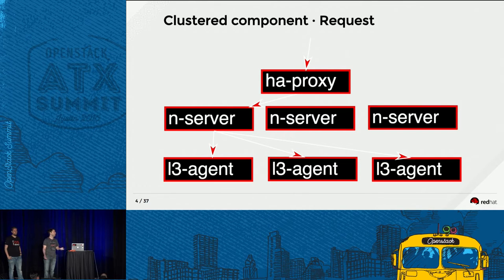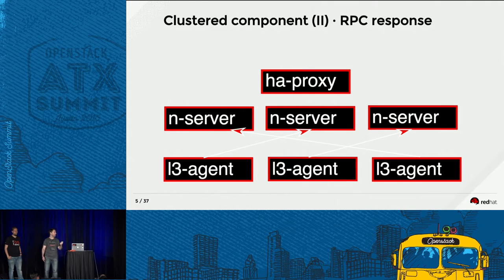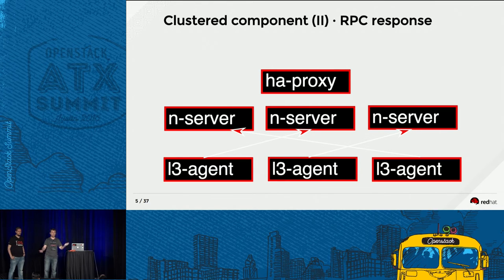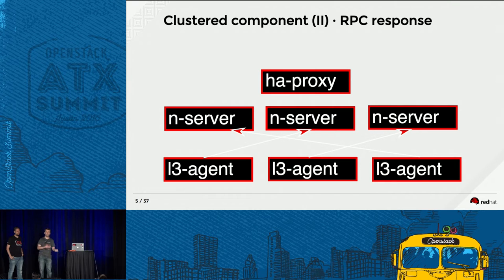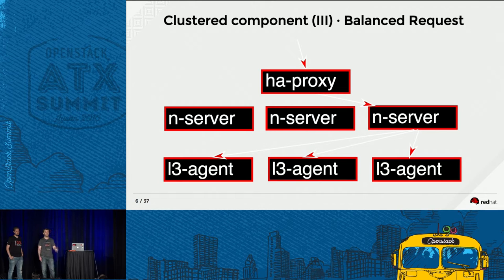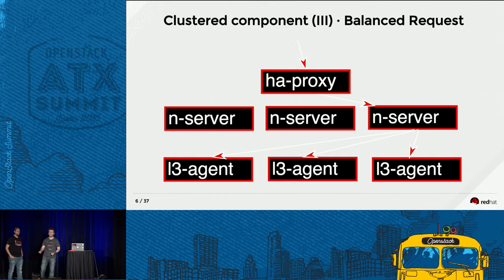When you get a response it can go to another server because it doesn't really matter which one — but it's getting harder to follow your request paths. Then you get a different request from the same flow going through another server because it's load-balanced. So if you're trying to find which problem you have, this is getting a lot messier to follow.